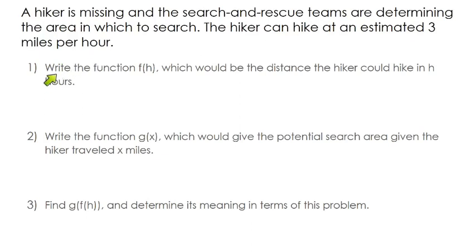Our first sub-problem says write the function, and we're going to call that f of h, which would be the distance the hiker could hike in h hours. It gives us information in the problem that helps us with this. It says the hiker can hike an estimated 3 miles per hour. So the distance they could have traveled could be given by this function. If you take the number of hours that have passed and multiply it by 3, that's the number of miles he could have traveled. So there's our f of h function.